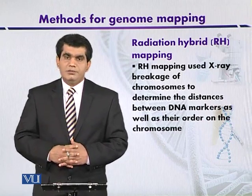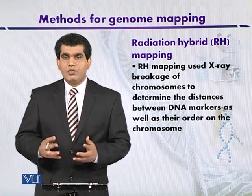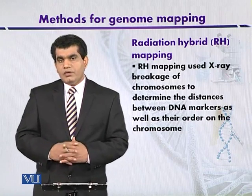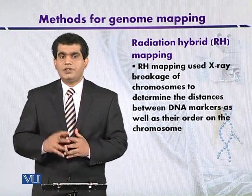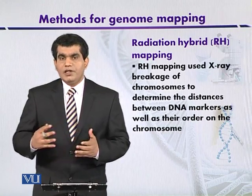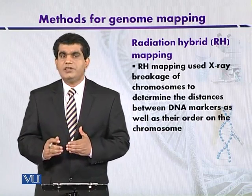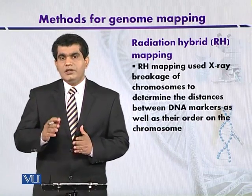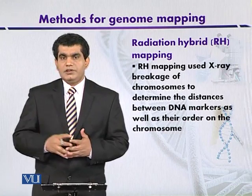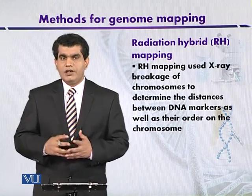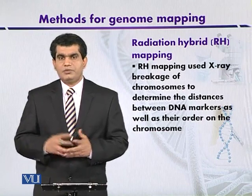This technique was developed in the 1970s by two scientists, Stephen Gauss and Henry Harris. They subjected mammalian cells to X-rays, which caused fragmentation of the genomic DNA randomly. The irradiated cell exposed to X-ray was then fused to a hamster cell. The hamster is an organism belonging to the group of rodents.